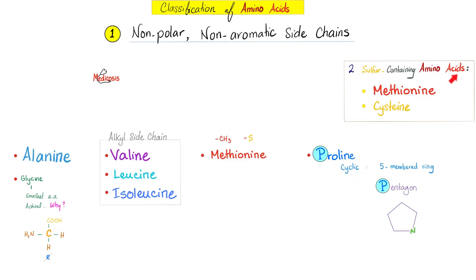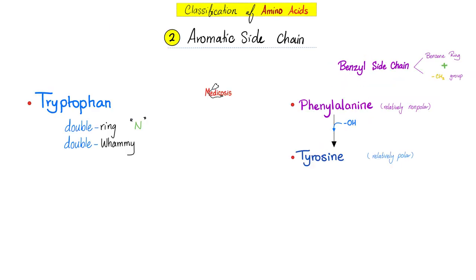What are the sulfur-containing amino acids in your body? The proteogenic ones are only two: methionine and cysteine. Next, aromatic side chain amino acids. Tryptophan and phenylalanine, which becomes tyrosine. Tryptophan: double ring and double whammy, because tryptophan can give you niacin, and it can also give you serotonin, which will become melatonin — two different pathways, as discussed before in the vitamins videos.